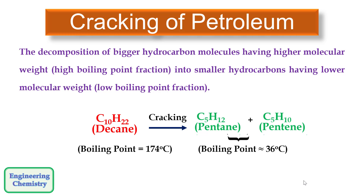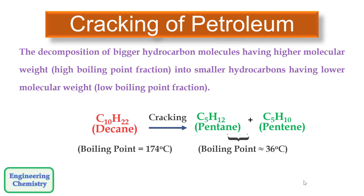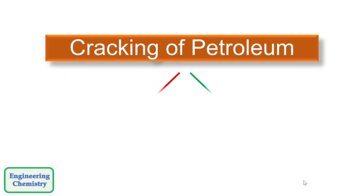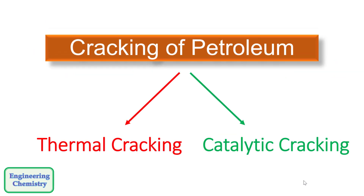The process of cracking is carried out for the production of gasoline or petrol, because the demand for gasoline is very high and sufficient gasoline is not naturally available. So it can be produced by cracking of higher hydrocarbons. Cracking is of two types: thermal cracking and catalytic cracking.